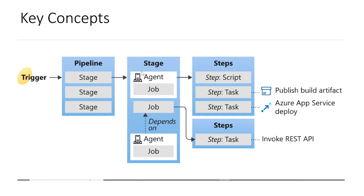Next we have stage. A stage is a way of organizing jobs in a pipeline, and each stage can have one or more jobs. A job can be either agent-based or agentless. Then comes steps — a step can be a script or a task, and it is the smallest building block of the pipeline. A script is simply a piece of custom code. A task is a pre-packaged script that performs an action, like publishing a build artifact or invoking a REST API.